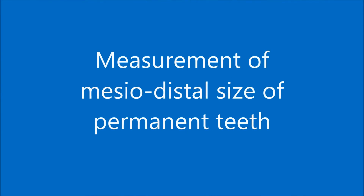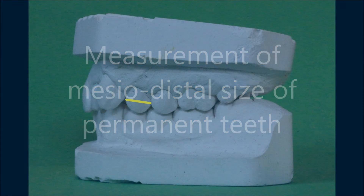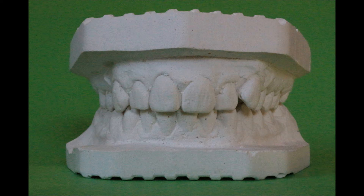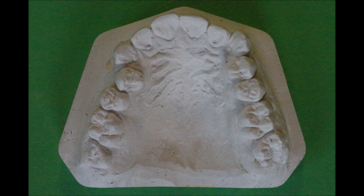Measurement of mesodistal tooth size. Mesodistal size of upper and lower permanent teeth is measured between the most distant points of their proximal surfaces and lower incisors along the cutting edge. Space deficit for each tooth is determined by comparison between tooth widths and space available for it in the dental arch.